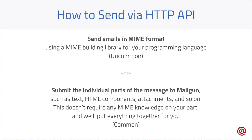Going into the HTTP API, there are also two methods you can use to send via that protocol. You can use our MIME format, or you can submit individual parts. The MIME format is actually fairly similar to SMTP in that you build everything around the message and just submit the whole message itself to our service. The individual parts method is a more common way where you would submit the from address, the to address, the subject, and the text itself. After that, we'll put it all together and deliver it to the recipient server.